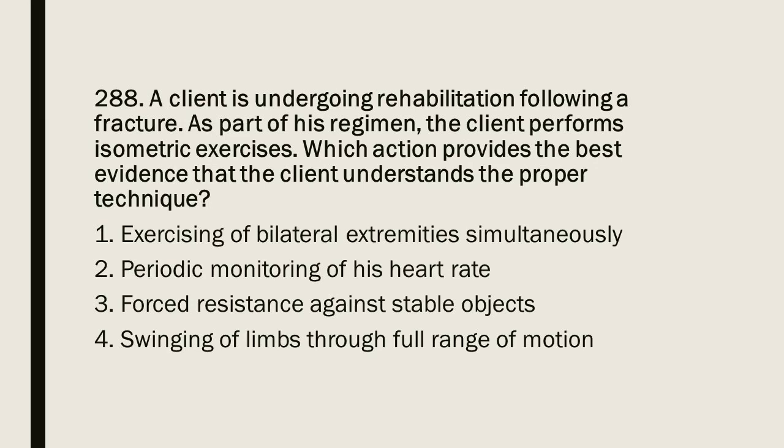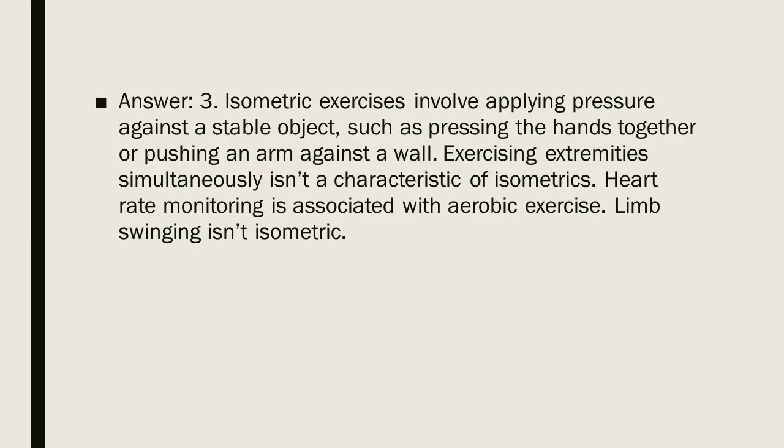Question 288: A client is undergoing rehabilitation following a fracture. As part of his regimen, the client performs isometric exercises. Which action provides the best evidence that the client understands the proper technique? 1. Exercising of bilateral extremities simultaneously. 2. Periodic monitoring of his heart rate. 3. Forced resistance against stable objects. 4. Swinging of limbs through full range of motion. Answer: 3. Isometric exercises involve applying pressure against a stable object, such as pressing the hands together or pushing an arm against a wall. Exercising extremities simultaneously isn't a characteristic of isometrics. Heart rate monitoring is associated with aerobic exercise. Limb swinging isn't isometric.